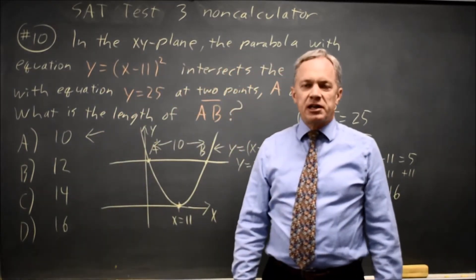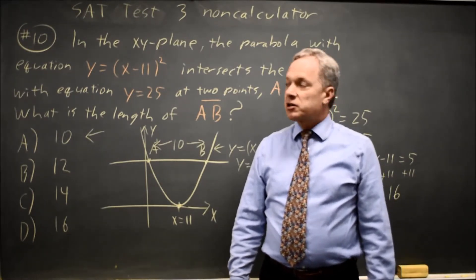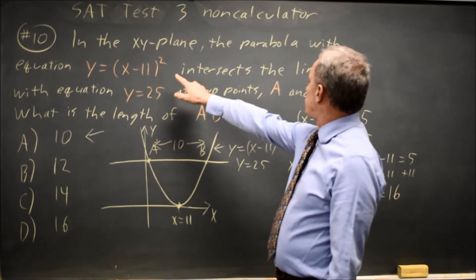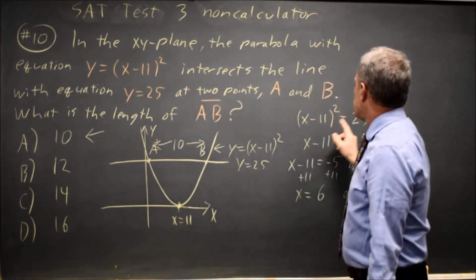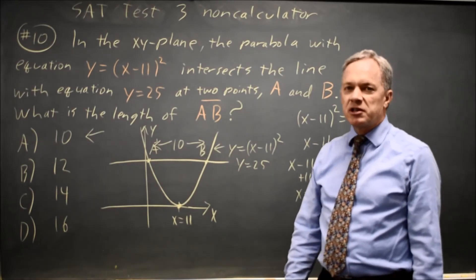College Board typically asks you for the solutions of a quadratic equation. I could also solve this by using FOIL on the x minus 11 squared, bring the 25 to the left-hand side, and then factor. But I believe this method was easier.